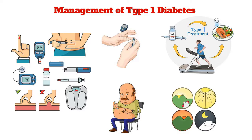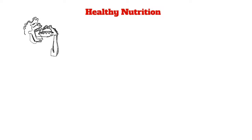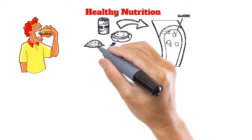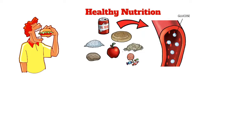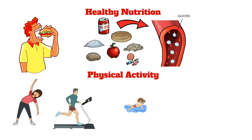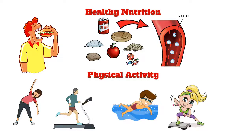Healthy nutrition — knowing what and when to eat — is an important part of diabetes management, as different foods affect blood glucose levels differently. Regular physical activity is also essential to help keep blood glucose levels under control. It is most effective when it includes a combination of aerobic exercise, such as jogging, swimming, and cycling, as well as resistance training, while reducing time spent being inactive.